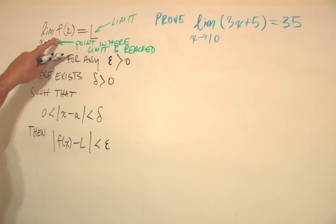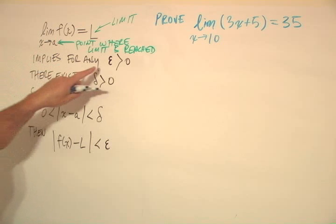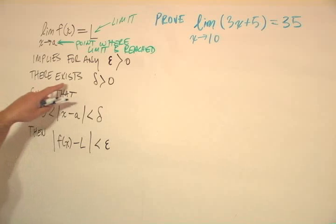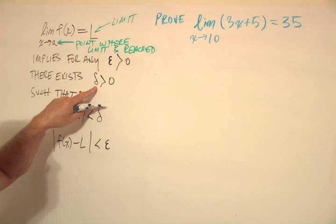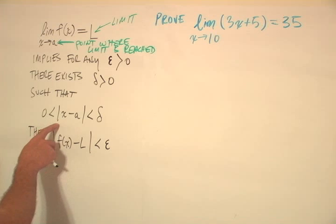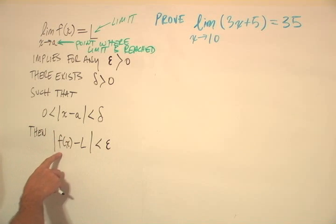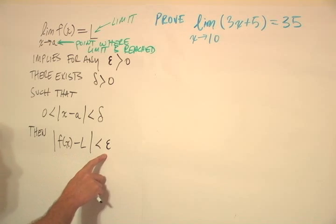And it says that the limit as f of x goes to l as x goes to a implies that for any epsilon, a Greek letter, epsilon greater than zero, there exists a delta, another Greek letter, greater than zero, such that the absolute value of x minus a is less than delta, then the absolute value of f of x minus l is less than epsilon.